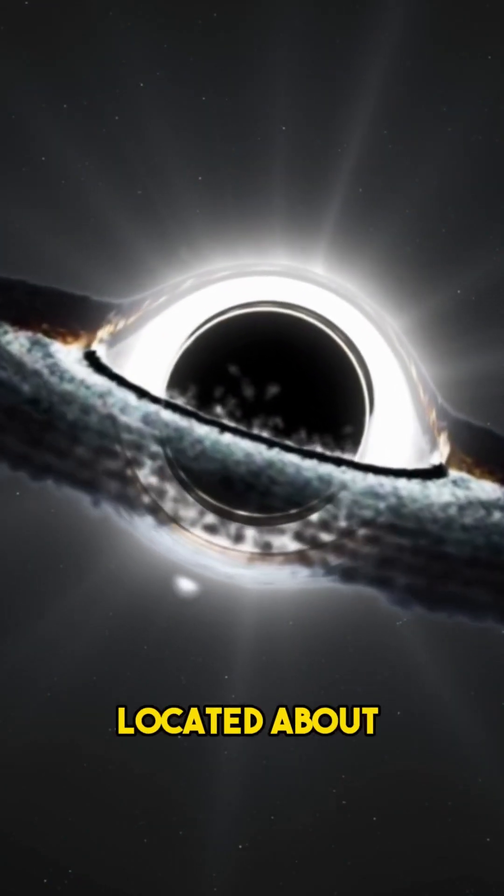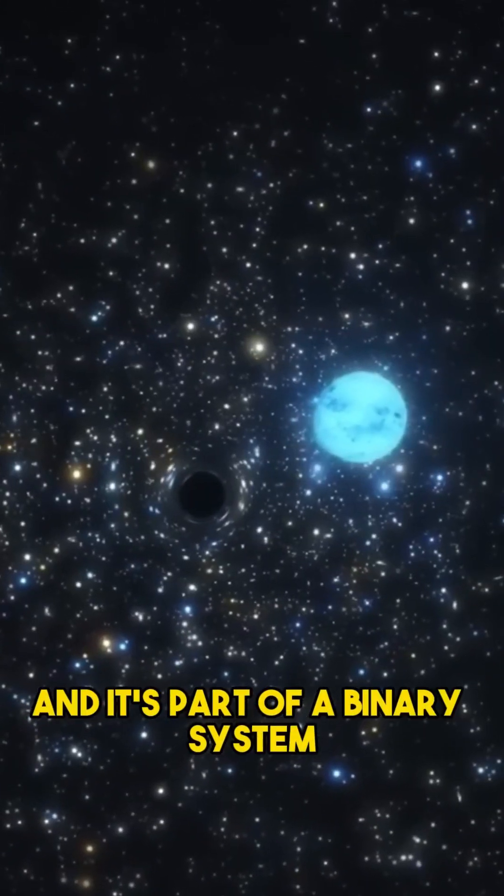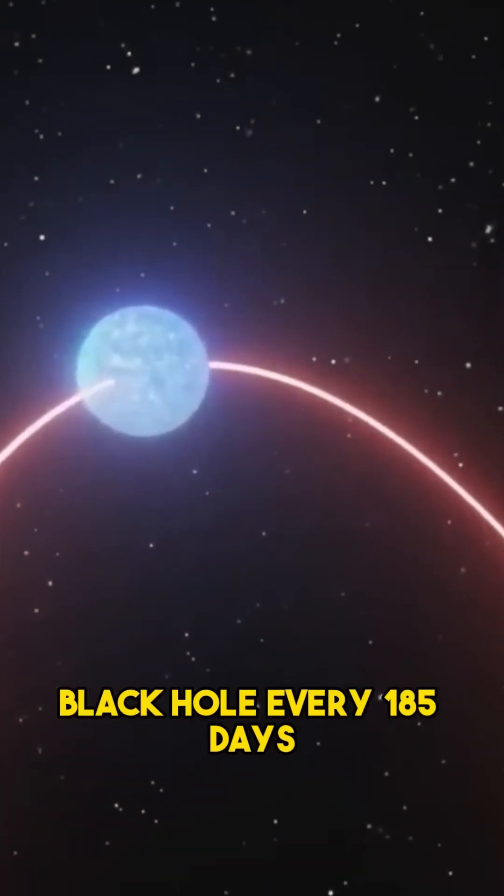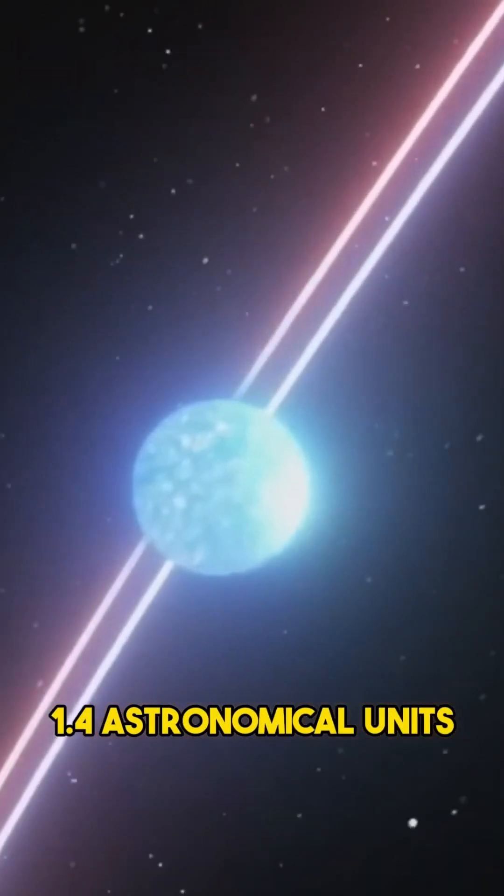Gaia BH1 is a black hole located about 1560 light-years away from us, and it's part of a binary system with a star that is very similar to our Sun. This star orbits the black hole every 185 days at a distance of about 1.4 astronomical units.